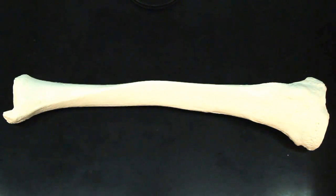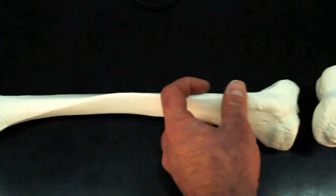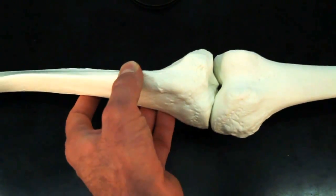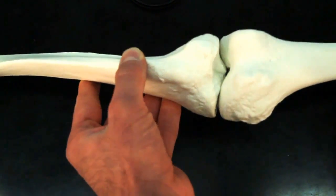Now what do these medial and lateral condyles articulate with? They articulate with the medial and lateral condyles of the femur, forming your knee joint.